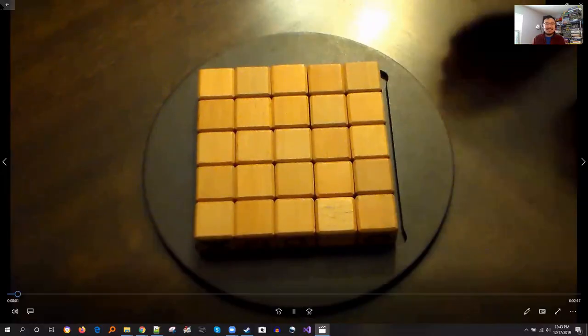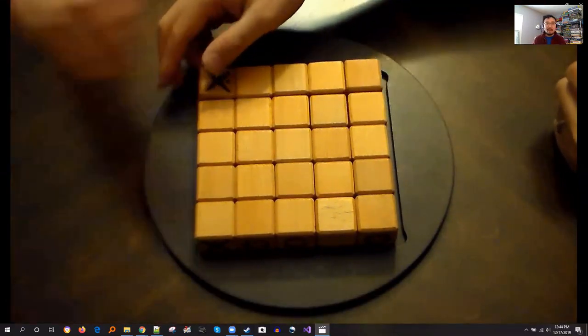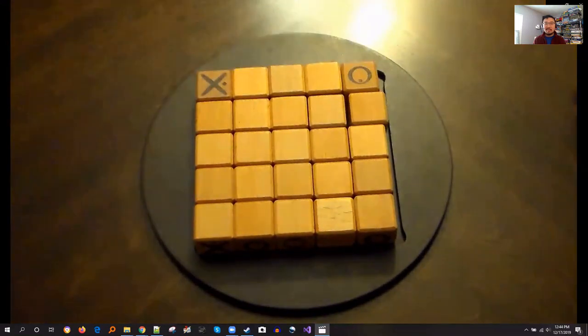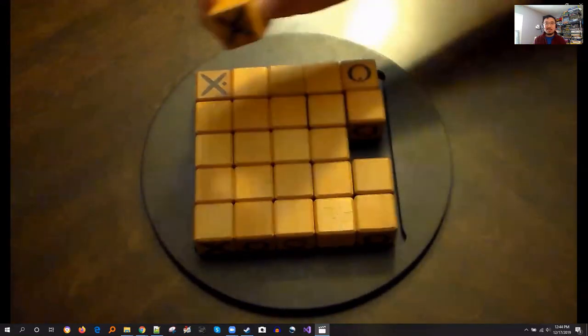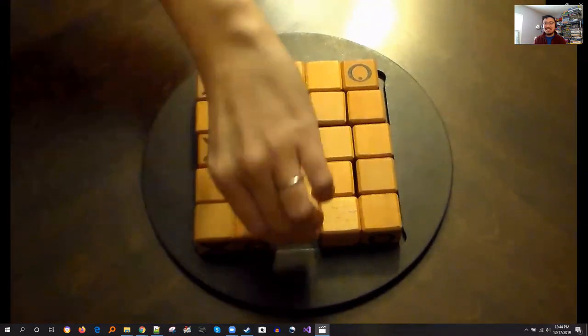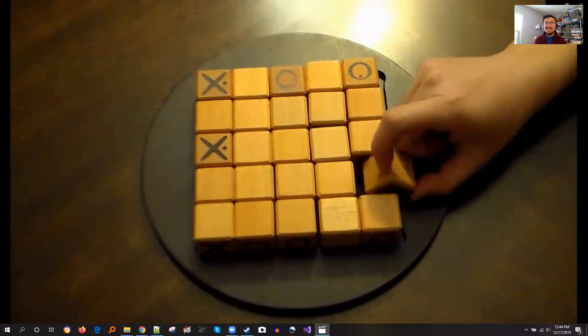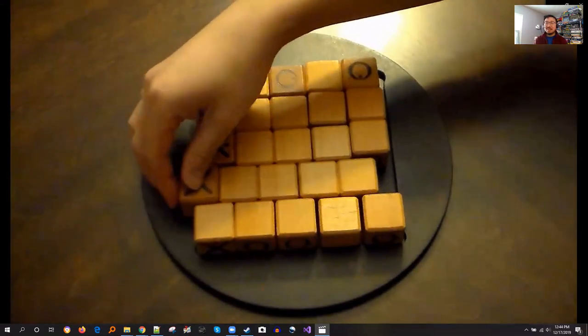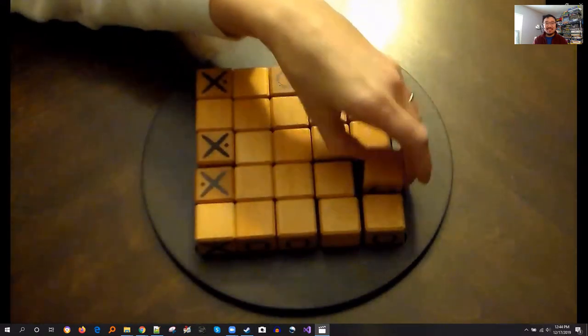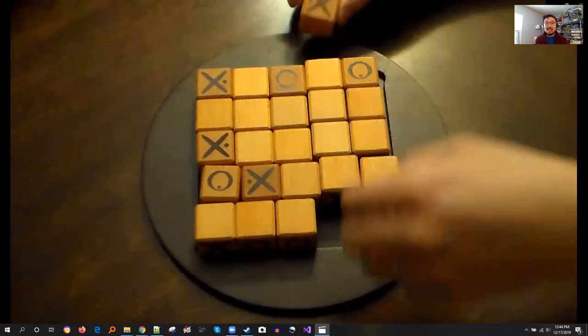Alright, game one, here we go. Okay, so X makes a play to get into the corner. O gets in the opposing, not opposing corner, but like an adjacent corner. Alright, X just goes in. O goes in. Man, it's really hard to commentate this. Alright, so X is trying to make a direct win line just on one edge.